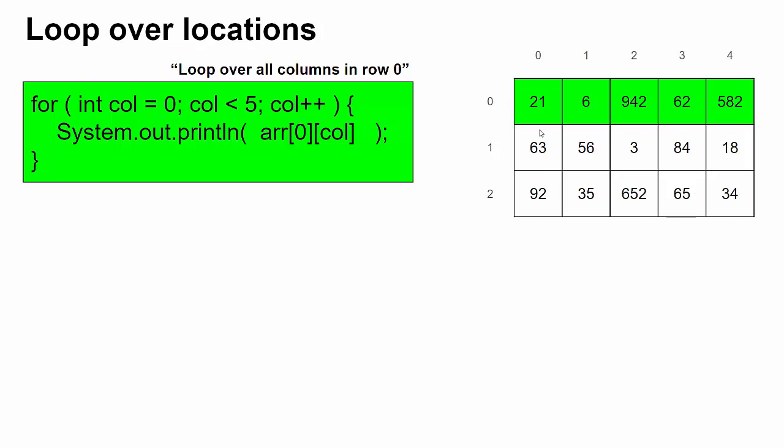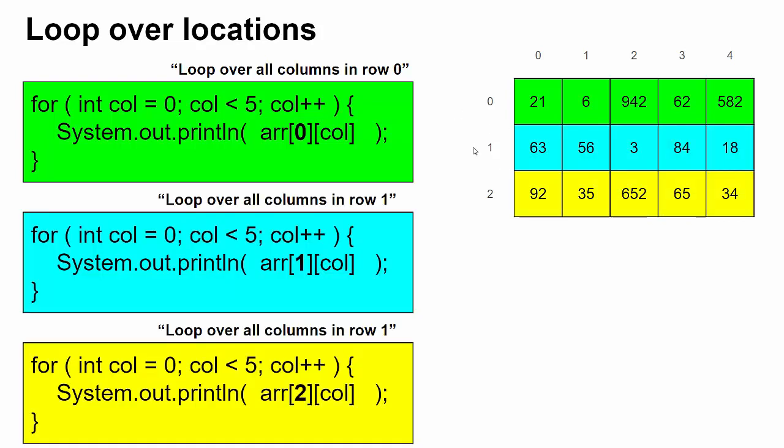If after that, if I wanted to loop through all of the columns in the next row, I could have the same pattern column is going from zero to four. Only now I have a one in the row location. And then if I wanted to loop through the bottom row, same pattern column could go from zero to four, but I'd have a two in the row location. So if I had these three loops, one after the next, then it would display the entire grid.